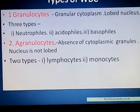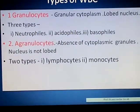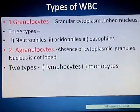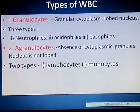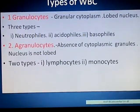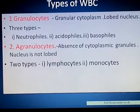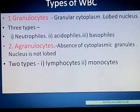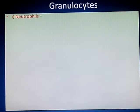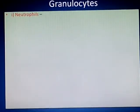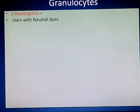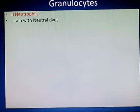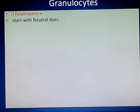Granulocytes further have three types: neutrophiles, acidophiles, and basophiles. Agranulocytes further show two types: lymphocyte and monocyte. Now we will study the detail account of granulocytes. Granulocytes contain cytoplasmic granules and a lobed nucleus. According to their staining property, they are differentiated into three types. Neutrophiles stain with neutral dyes, acidophiles with acidic dye, and basophiles with basic dye.